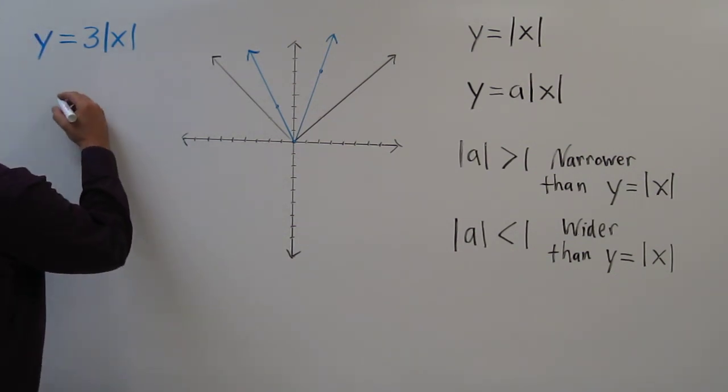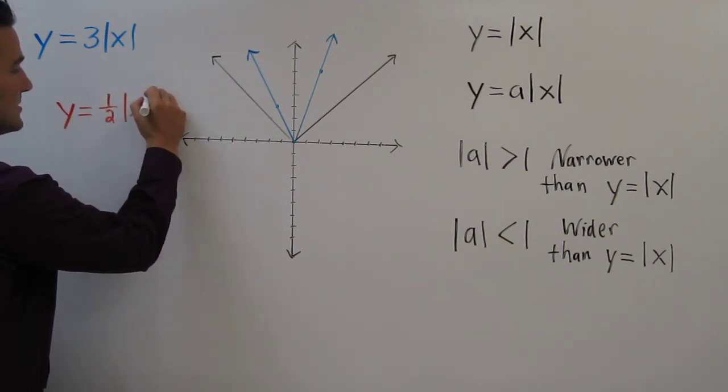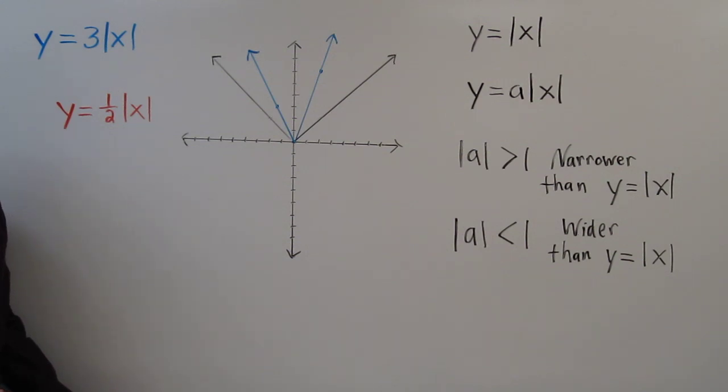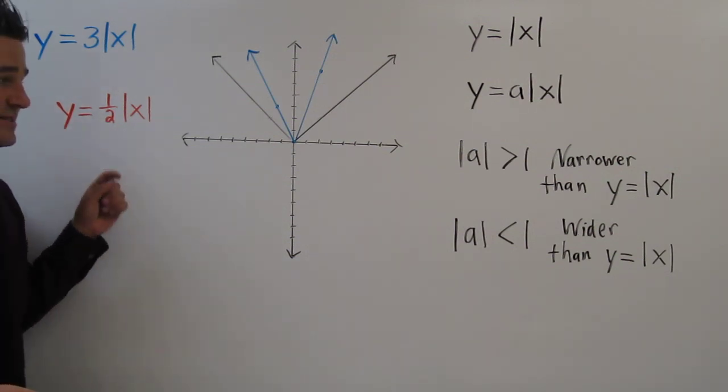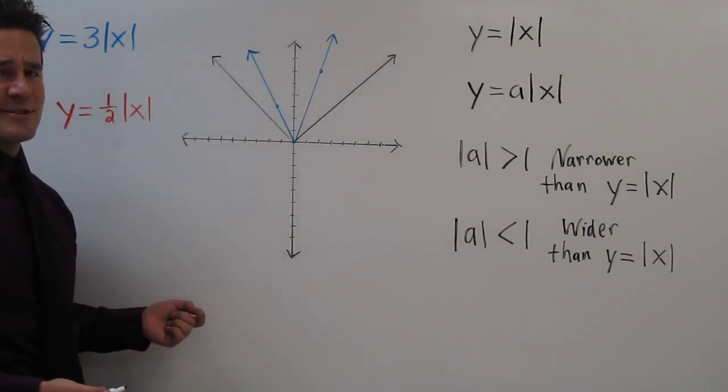How about y equals 1 half times the absolute value of x. In this case, our a has an absolute value that is smaller than 1, so we're going to expect a graph that's wider.